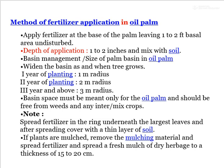Method of fertilizer application in oil palm: fertilizer is applied at the base of the palm, leaving 1–2 feet of the basal area undisturbed. Depth of application is 1–2 inches, mixed with soil. Basin management: widen the basin as the tree grows — first year 1-meter radius, second year 2-meter radius, third year 3-meter radius. The basin must be maintained only for the oil palm and kept free from weeds and intercropped plants. Spread fertilizers in a ring underneath the largest leaves. If plants are mulched, remove mulching material, spread fertilizer, then apply fresh mulch of dry herbage to a thickness of 15–20 cm.